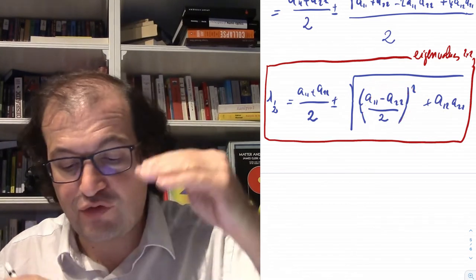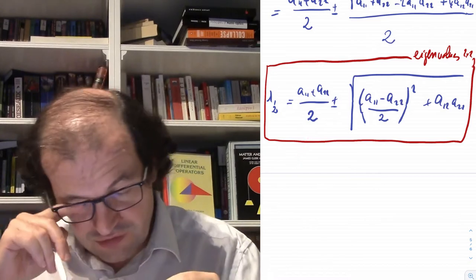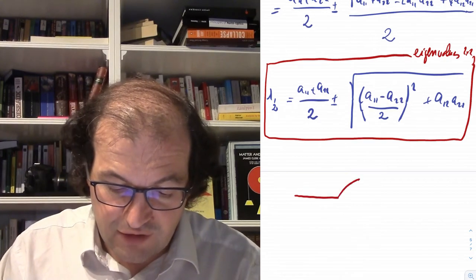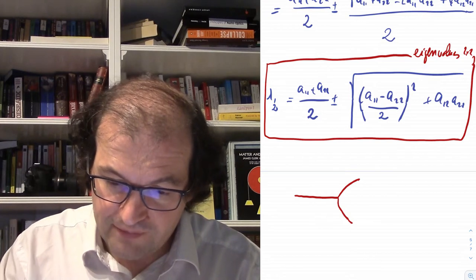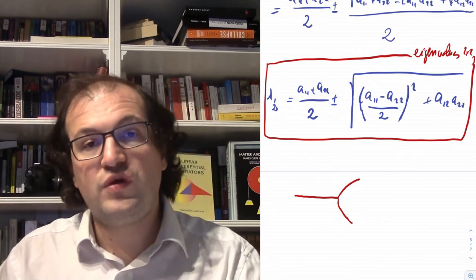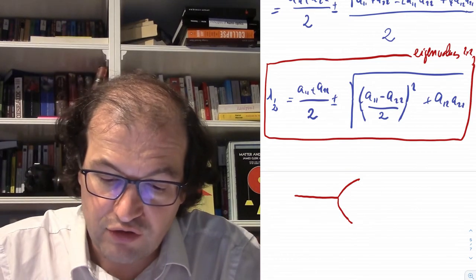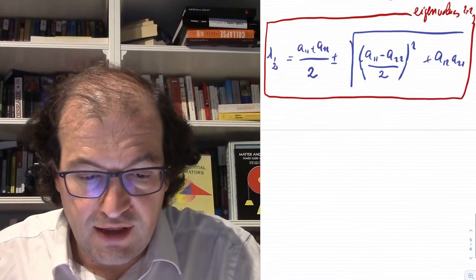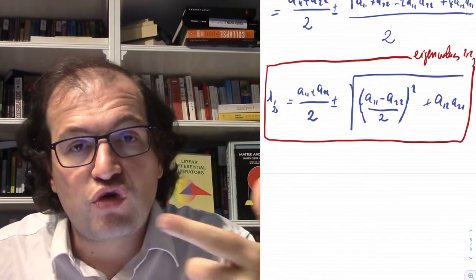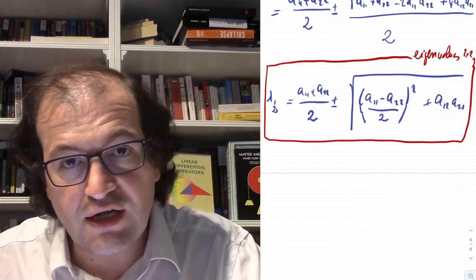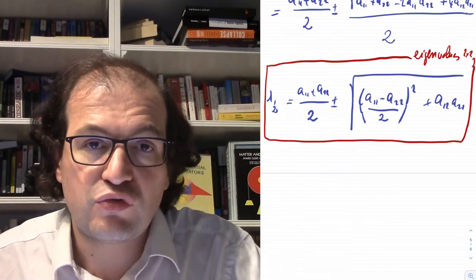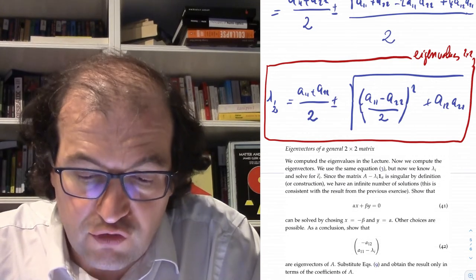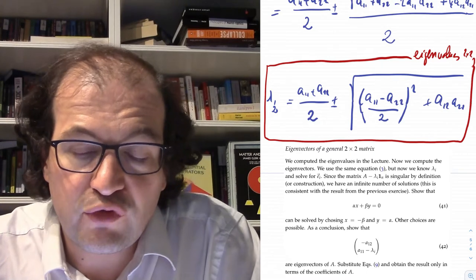When the two diagonal elements are equal, the average is just the common value, the difference term is zero, and the splitting comes entirely from the coupling term. When people speak of the eigenvalues of two coupled oscillators, this is the formula to use. Now that we have the eigenvalues, we should compute the eigenvectors — we leave that as a problem for you.